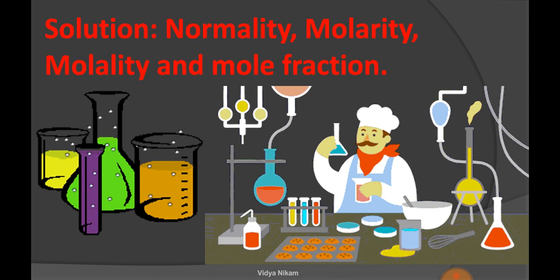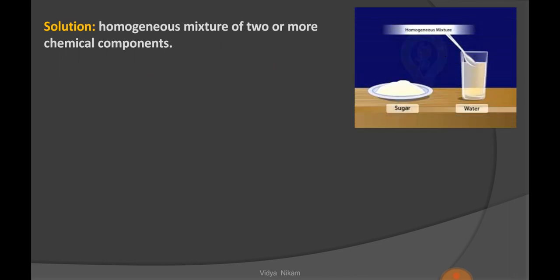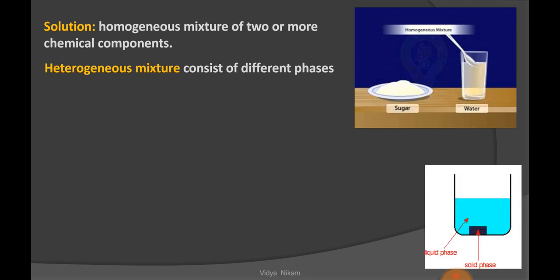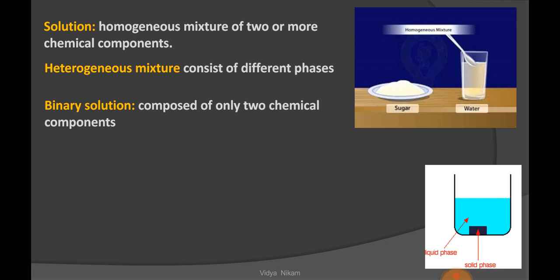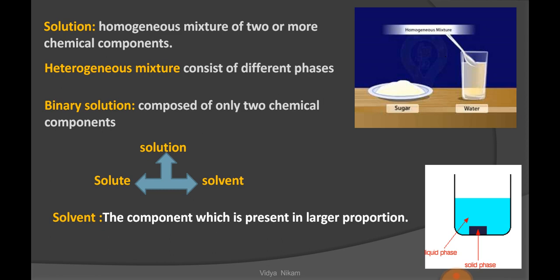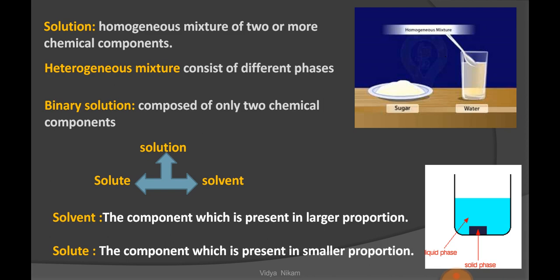So let us start from solution. Solution is defined as the homogenous mixture of two or more chemical components. For example, a teaspoon of sugar added into a glass of water. A heterogeneous mixture consists of different phases. In solution, the binary solution is composed of two chemical components, mainly solute and solvent. The solvent is the component present in larger proportion and the solute is the component present in smaller proportion.